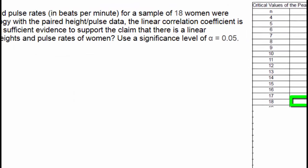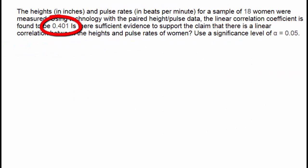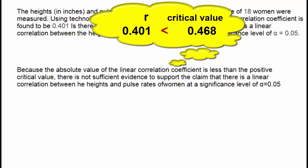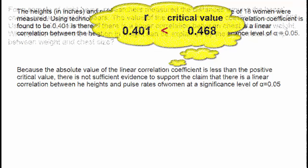However, our correlation coefficient is 0.1401, which is not greater than the critical value of 0.468. Because the absolute value of the linear correlation coefficient is less than the positive critical value, there is not sufficient evidence to support the claim that there is a linear correlation between the heights and pulse rates of women at a significance level of alpha equal to 0.05.